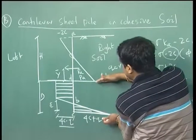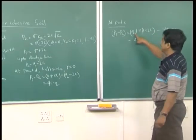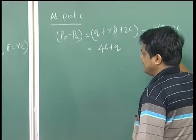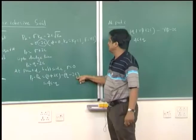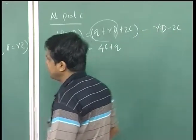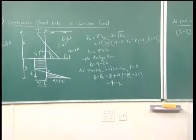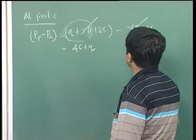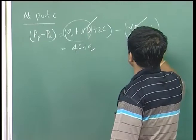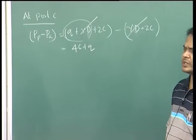The surcharge acts above the embedded depth D. So the calculation gives: Q + γD + 2C + 2C − Q − 2C, where γD terms cancel, yielding 4C + Q. On one side the net pressure is 4C + Q, and on the other side it is 4C − Q.